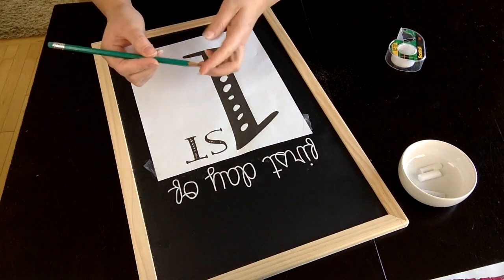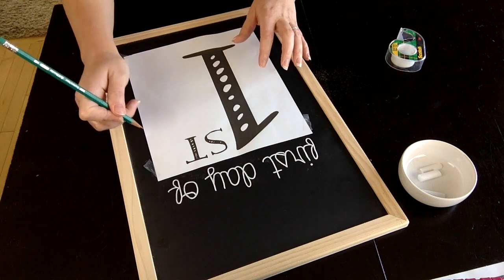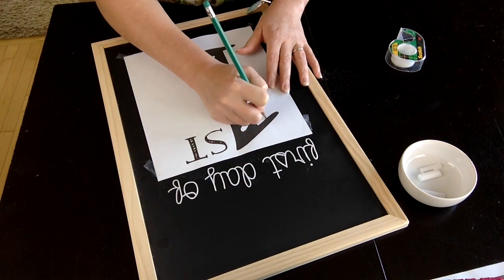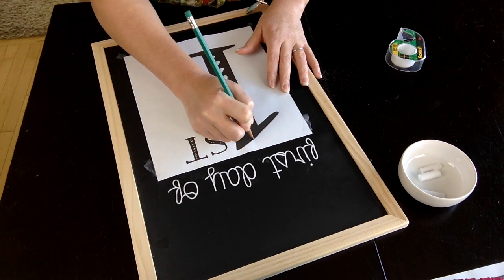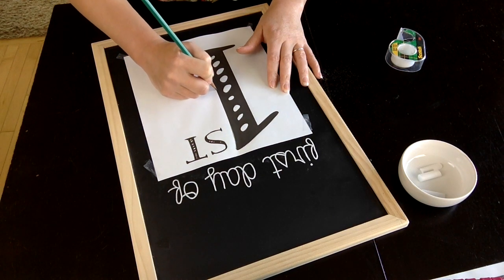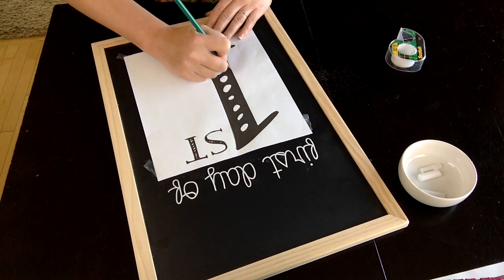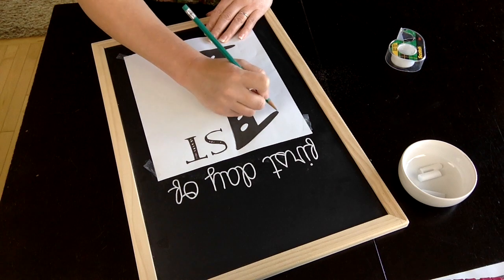Take a pencil. Mine's kind of a little dull at the end—I don't want it pressing so sharply in that it will scratch my chalkboard underneath. You can take a pencil or if you have a stylus or anything that's a little bit blunt at the end, trace over your outline of your stencil that you've printed out. You can do this with any font that you'd like. I offered up a couple different options on my blog post.